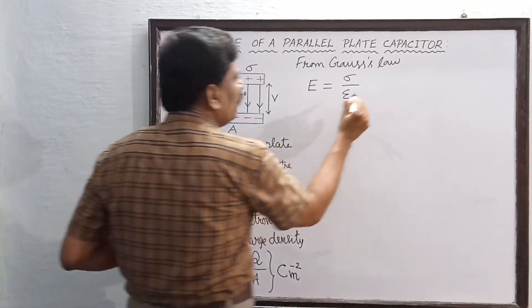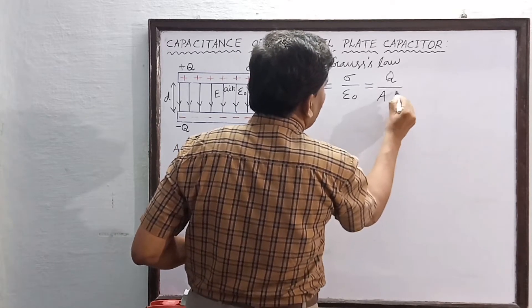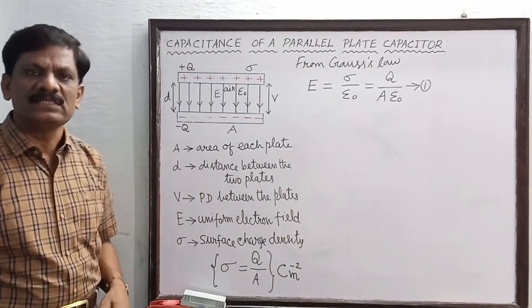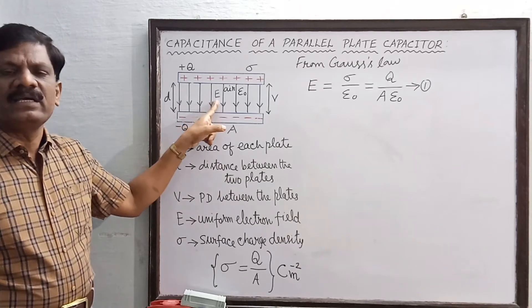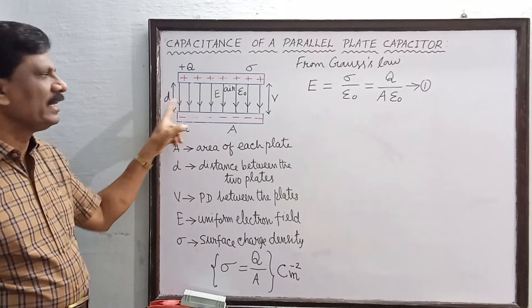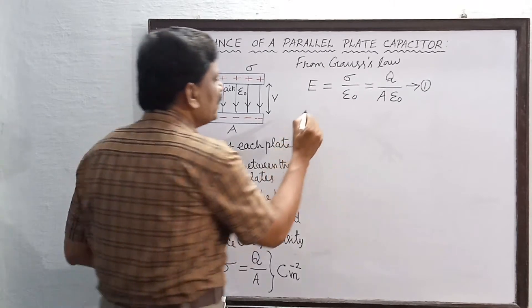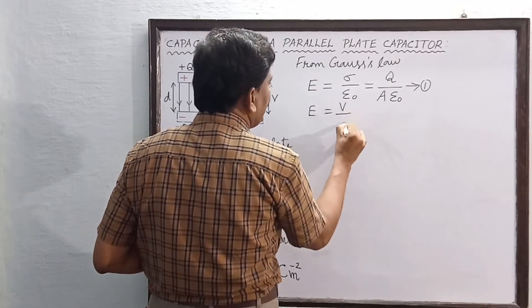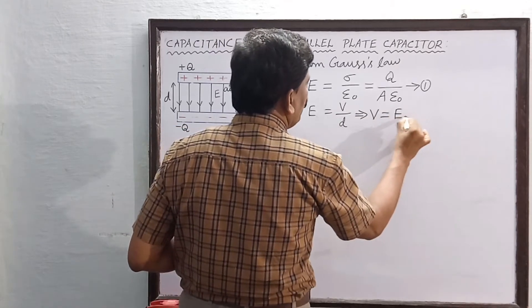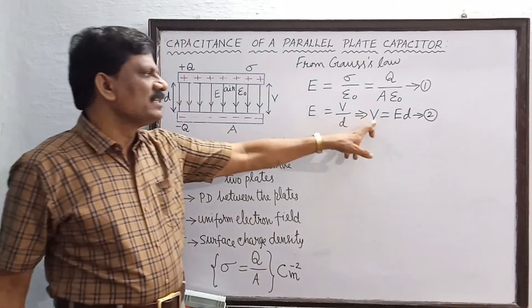So this becomes E = q/(Aε₀) — this is equation 1. Now, if you divide the potential difference between the two plates by the distance of separation, that equals the magnitude of the electric field: E = V/d, which implies V = E·d. This is equation 2.